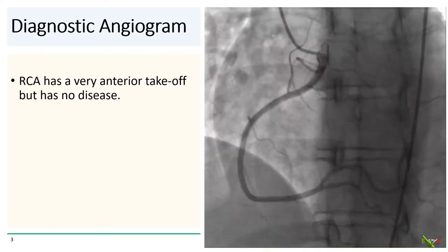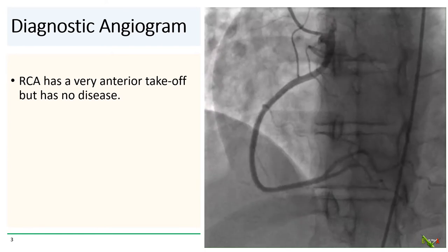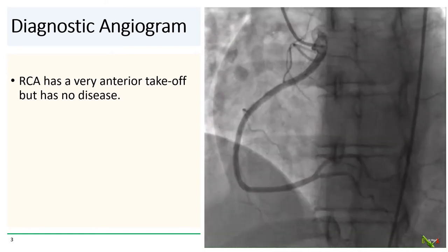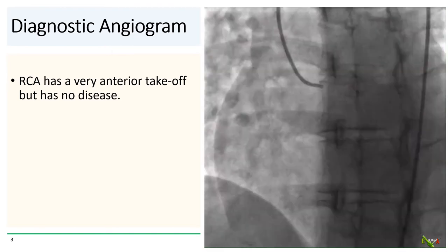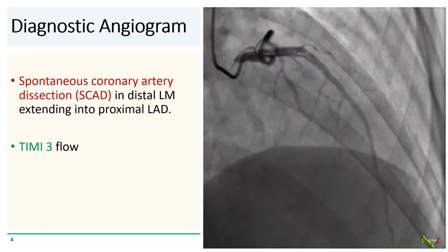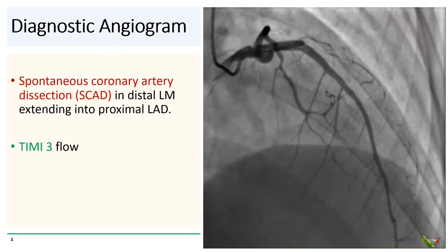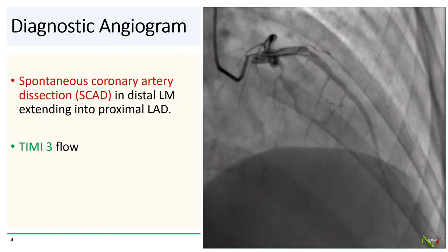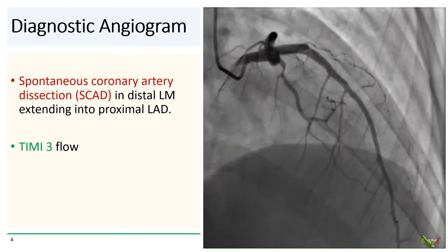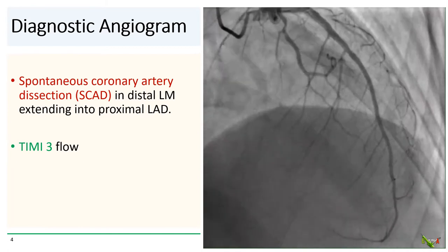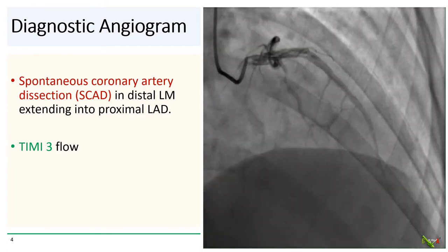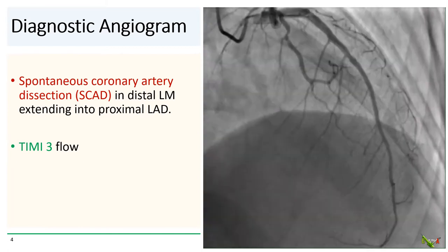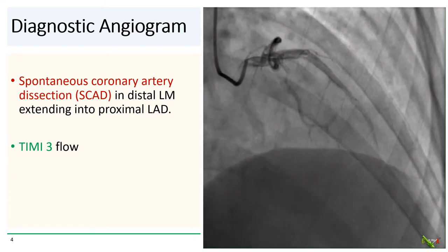On diagnostic angiogram, the RCA had a very anterior takeoff but has no disease. Looking at the left side now, we can clearly see a white line extending from the distal left main into the LAD. This white line is the dissection flap that separates the true lumen from the false lumen.